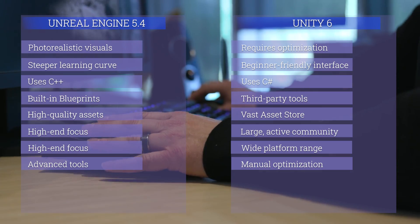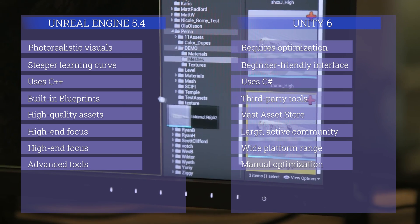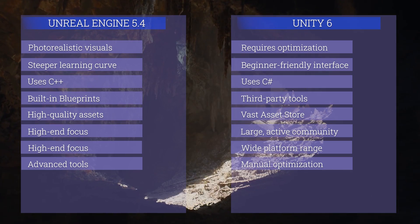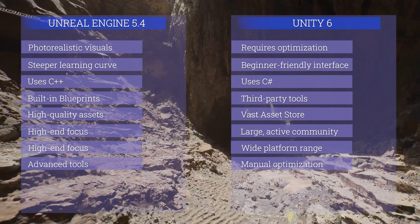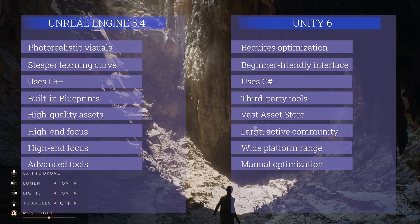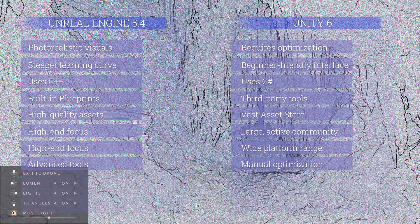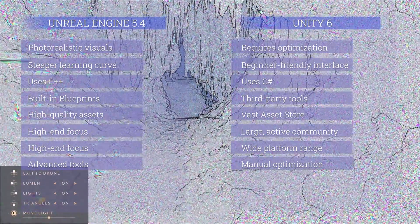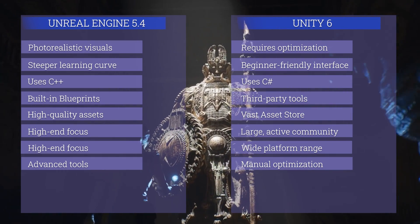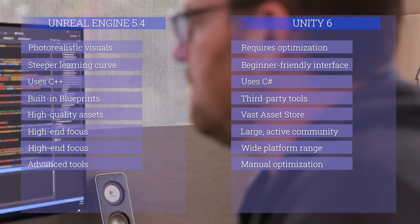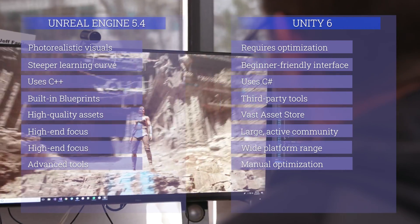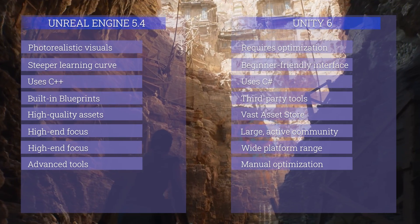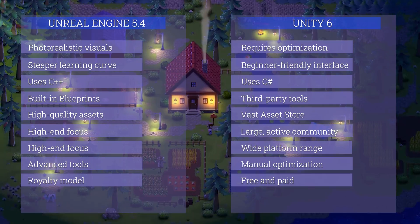For performance optimization, Unity requires more manual optimization especially for high-performance applications. Unreal Engine offers advanced optimization tools and features like Nanite and Lumen that help manage performance automatically. Unreal Engine also benefits from C++, which is inherently high-performance. These Nanite and Lumen features added in Unreal Engine 5 are remarkable — they allow use of high-quality maps and assets while managing performance automatically.